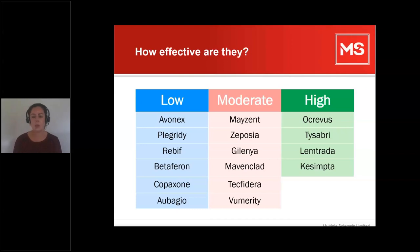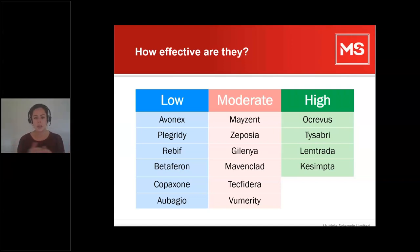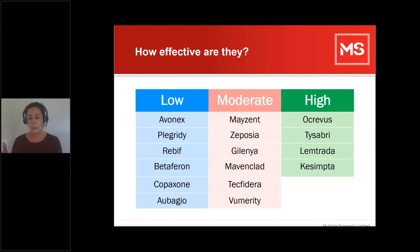DMTs are categorised into rough efficacy groups: high, moderate, and low effectiveness. Just because drugs are in the same category doesn't mean they're exactly on par — one might be slightly more effective than another. Medications in the high category are proven to be much more effective and will prevent more damage. Think of it like sunscreen — SPF 15 versus SPF 50.